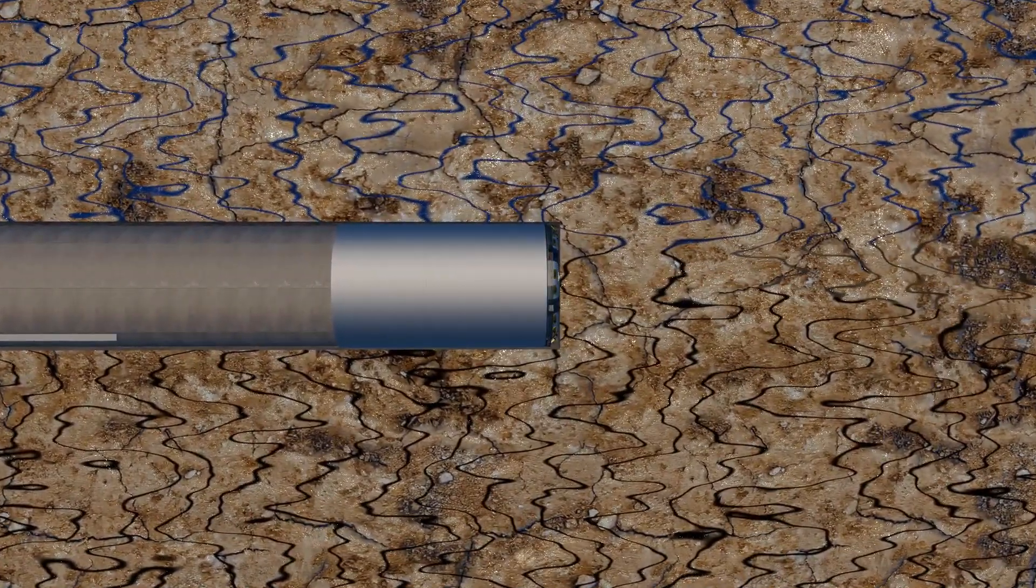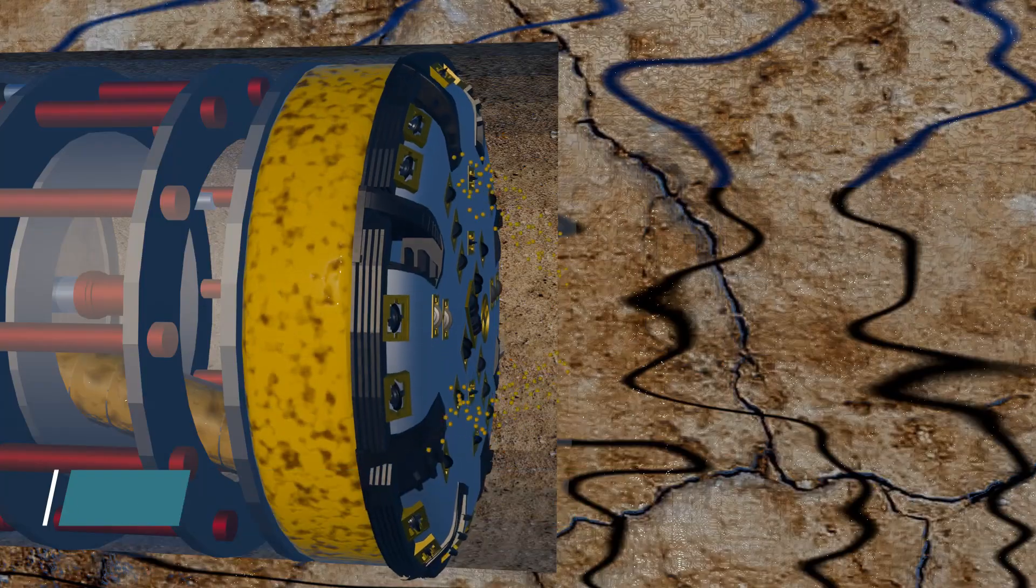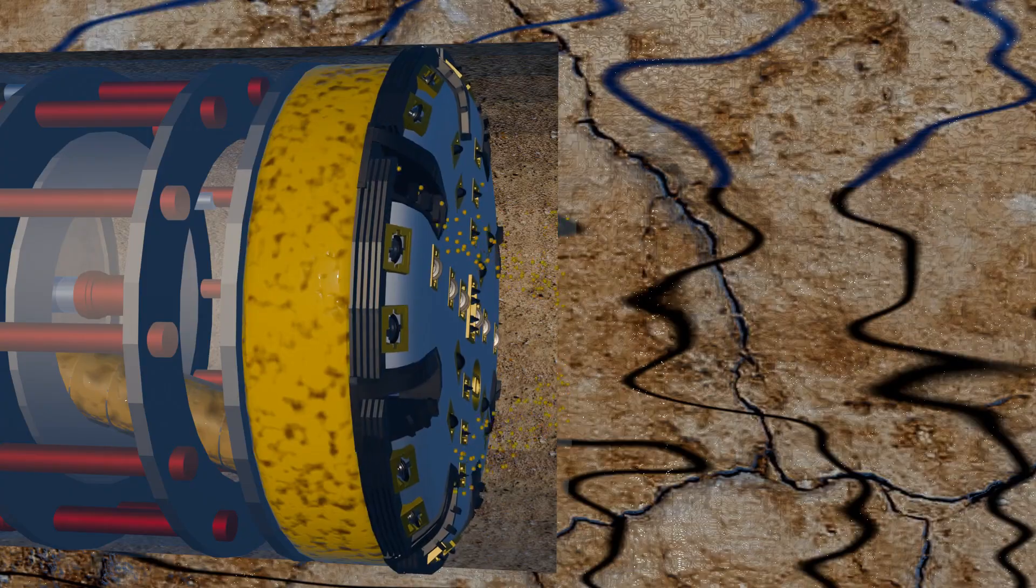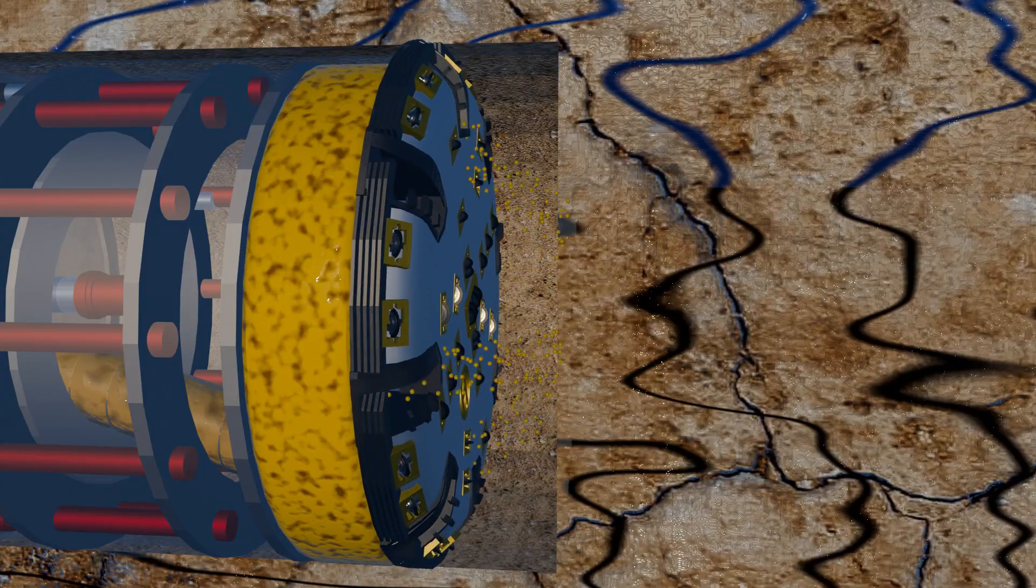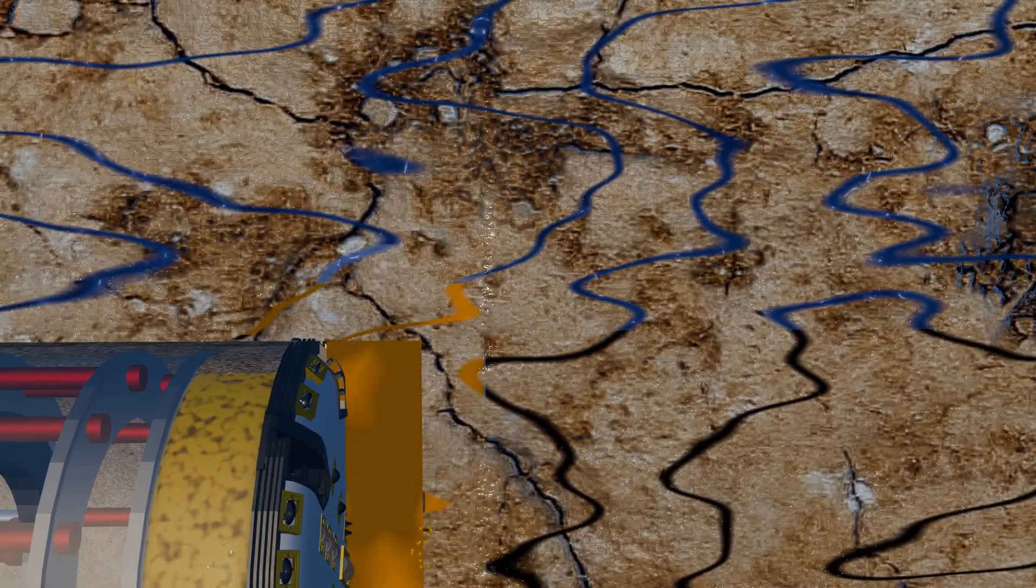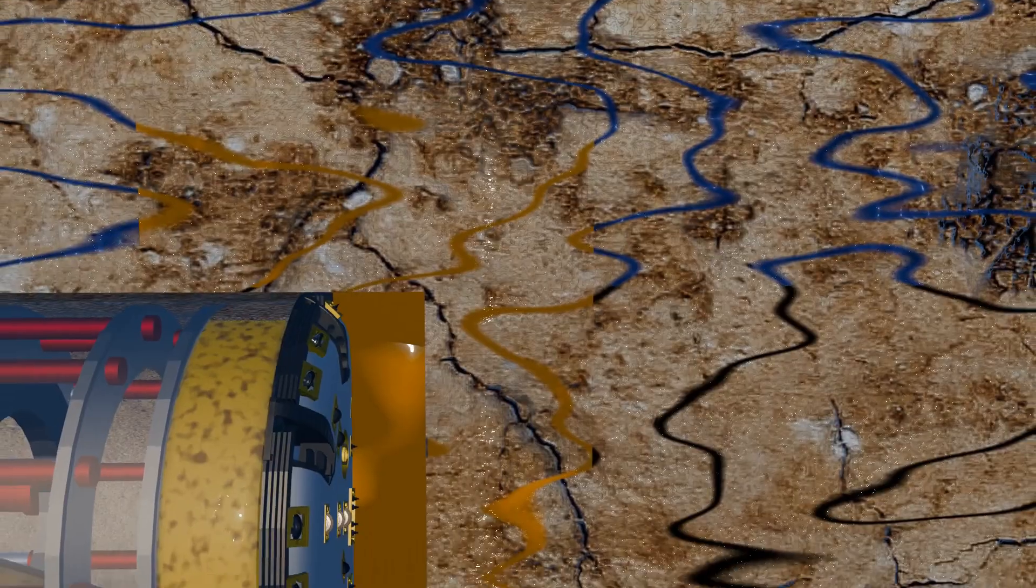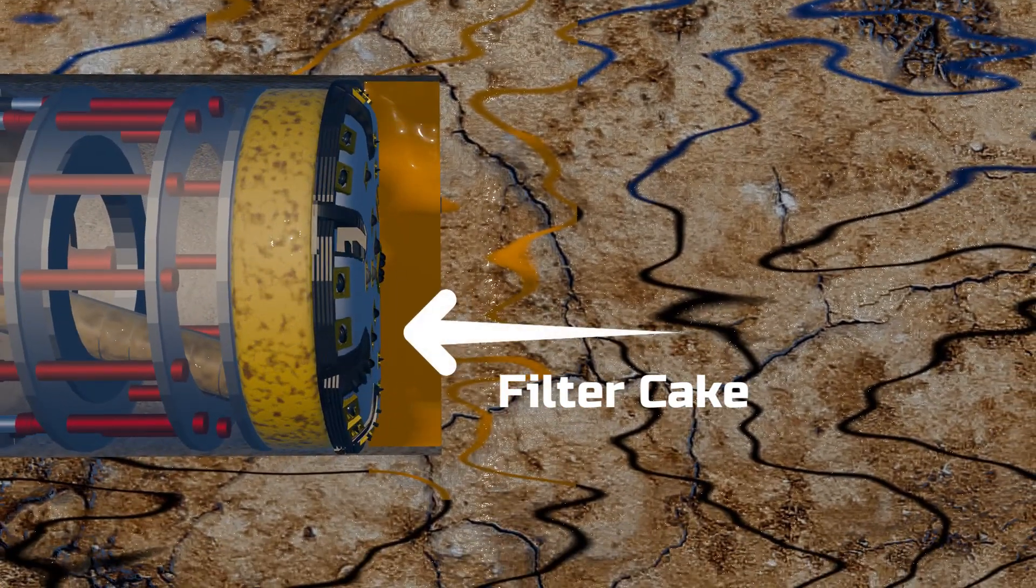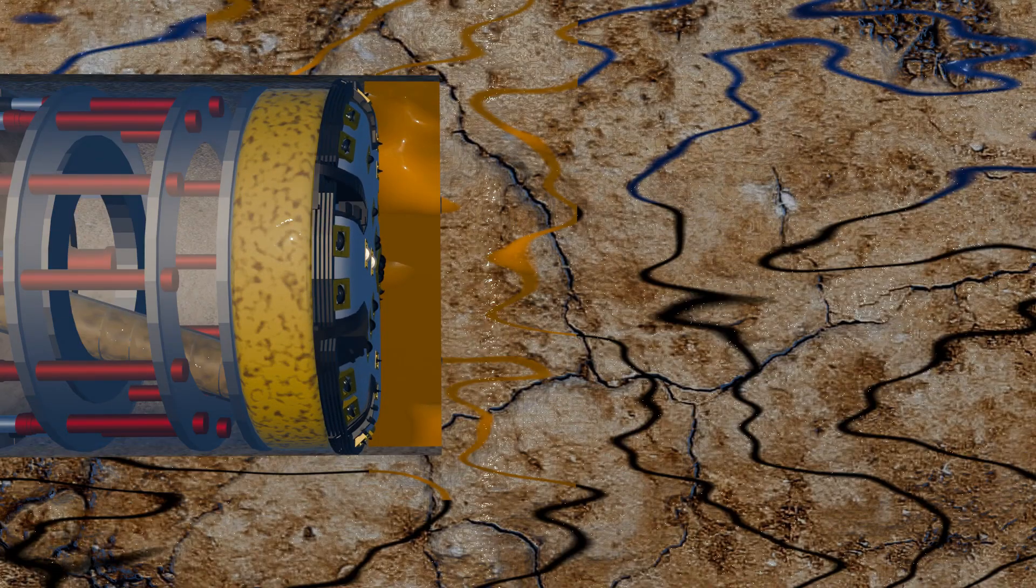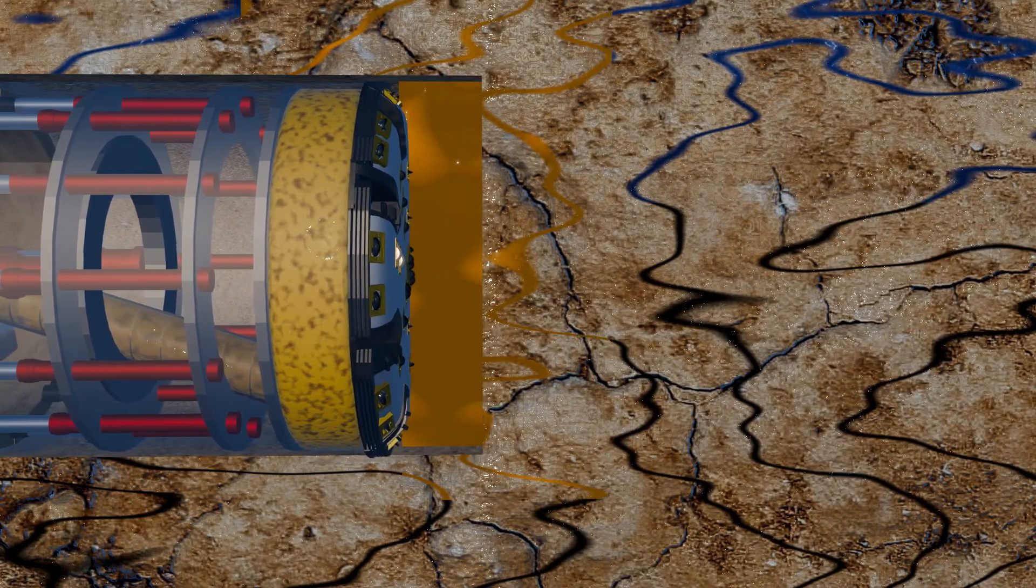To address this issue, the French team used a slurry TBM. This machine mixed bentonite, clay, water, and polymer, and injected the mixture under pressure into the tunnel face from the TBM's cutter head. This slurry filled the cracks, effectively stopping the water leakage. Additionally, the mixture formed a filter cake on the TBM's front face, sealing the cracks and eliminating the water ingress problem entirely. With the water leakage resolved, the TBM head could resume cutting, and the machine advanced smoothly.